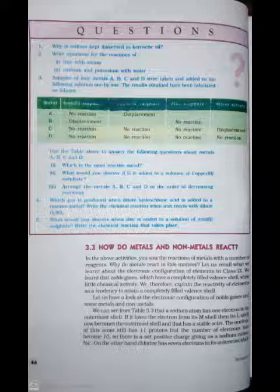3: Samples of 4 metals A, B, C and D were taken and added to the following solution one by one. The results obtained have been tabulated as follows. Use the table above to answer the following questions about metals A, B, C and D. First: Which is the most reactive metal? Second: What would you observe if B is added to a solution of copper sulfate? Third: Arrange the metals A, B, C and D in the order of decreasing reactivity.